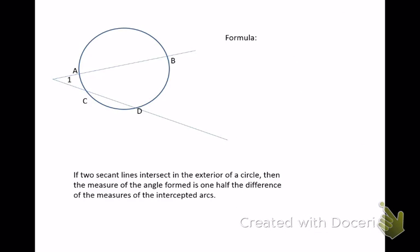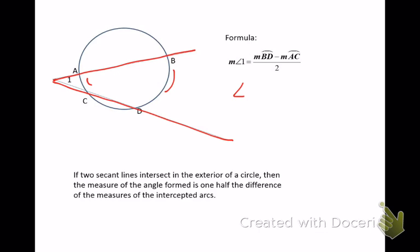Next, talking about when two secants meet. We're still talking about the vertex being outside the circle. If you trace the angle out, the only arcs we need to find the angle are the two arcs inside the angle — BD and AC. We're still going to use big minus small divided by two. The other two arcs we might need to find one of the arcs inside the angle, but ultimately we don't need them to find the angle itself.